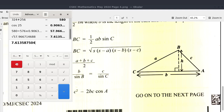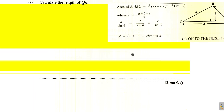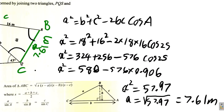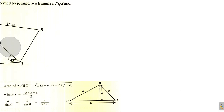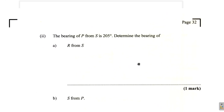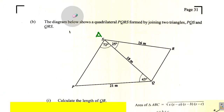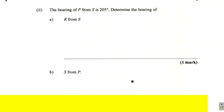This is where we left off last time. Let's erase this. We want to do this part of the question where it says the bearing of P from S is 205 degrees. Remember your bearings. You're supposed to attempt it before you watch the video — the bearing of R from S and the bearing of S from P.